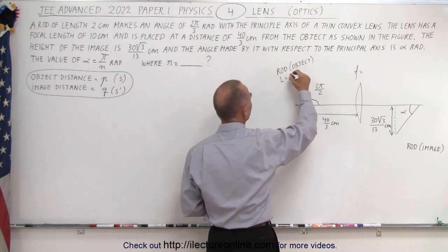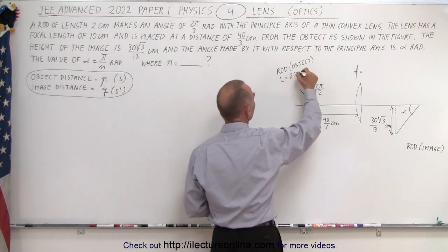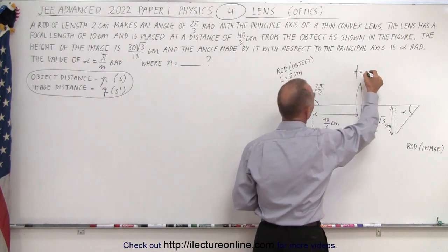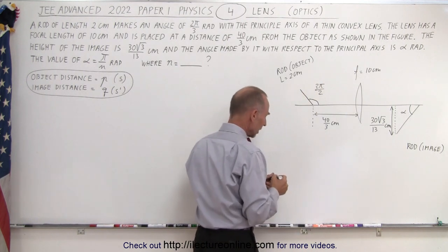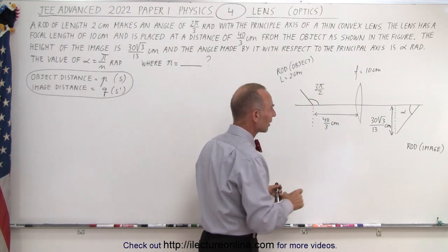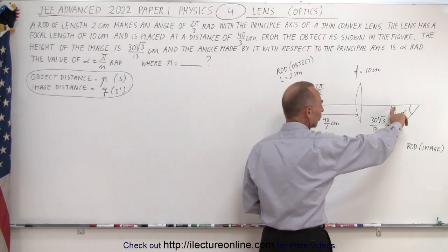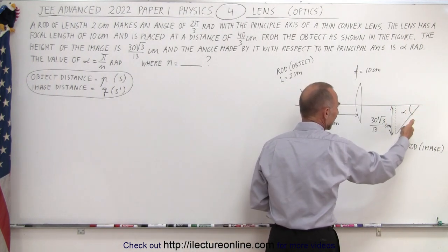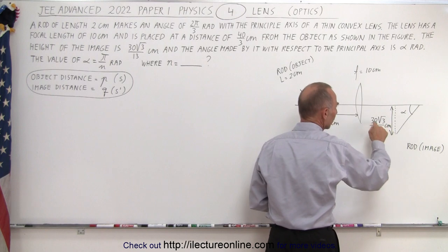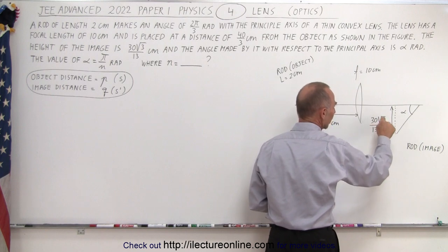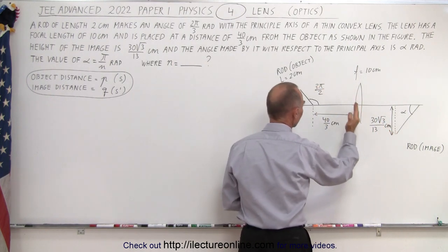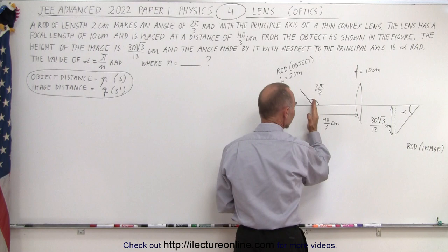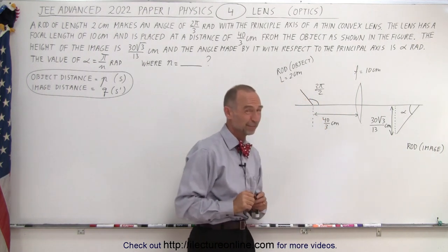The length of the rod is 2 centimeters and the focal length of the lens is 10 centimeters. They tell us this vertical distance of the image is 30 times the square root of 3 over 13 centimeters, and the distance from the lens to the beginning of the object is 40 over 3 centimeters.